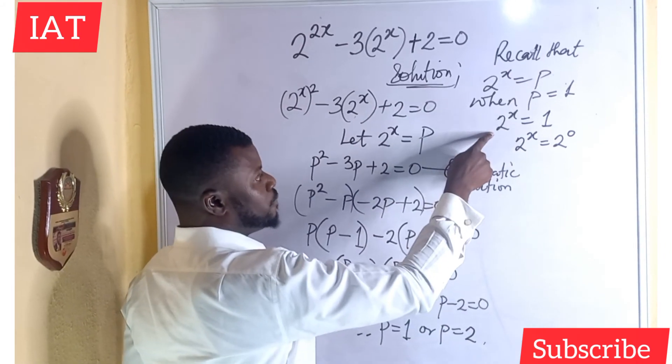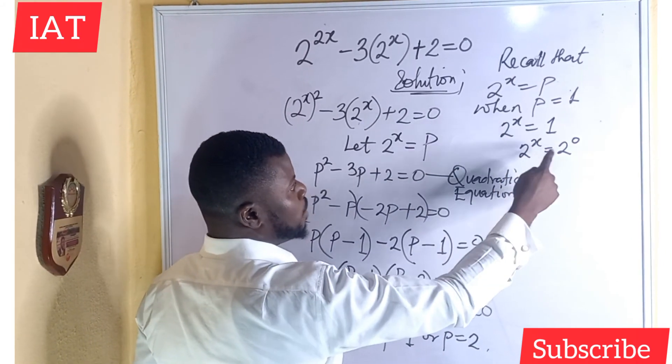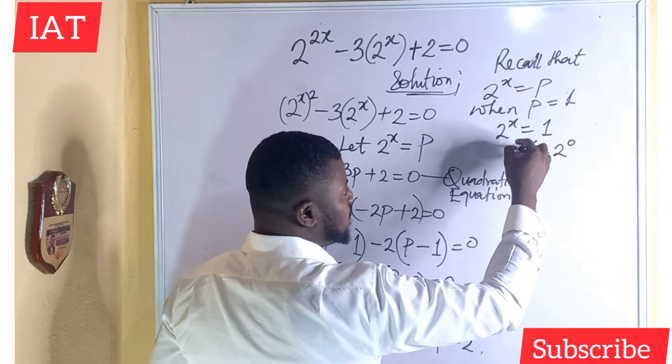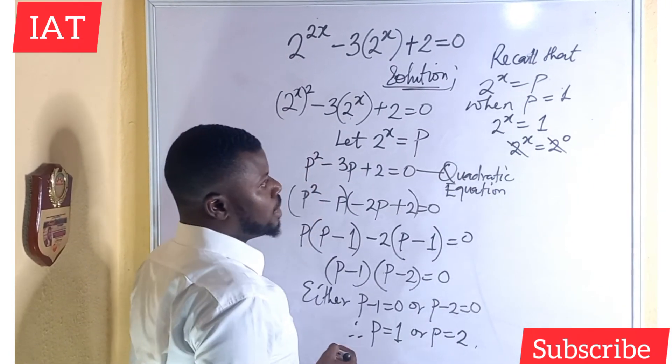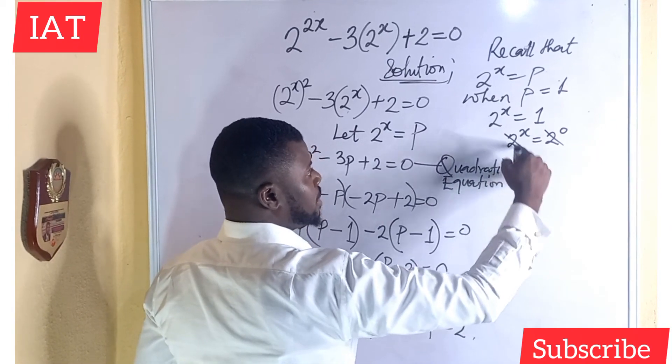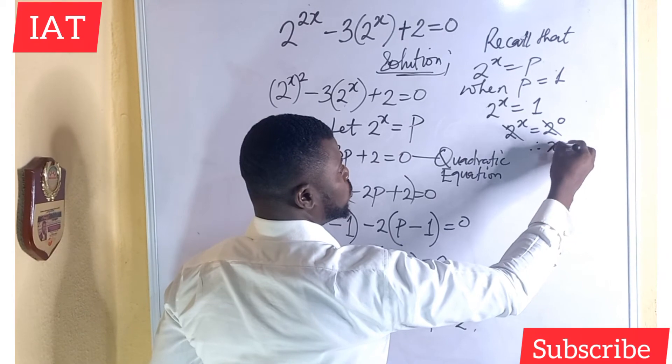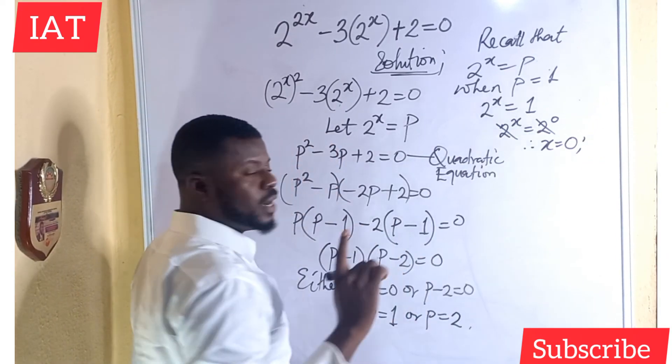And why did I choose 2? It's because I'm having a base of 2. If here we have to be 5, I will choose a base of 5. At this point, since the bases are the same, they cancel out then equate the powers. Because if the bases are the same, it means the powers also must be the same. Therefore, x is equal to 0. We just got one value of x.